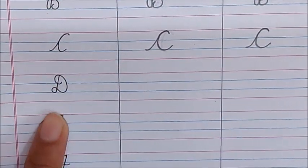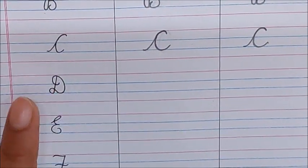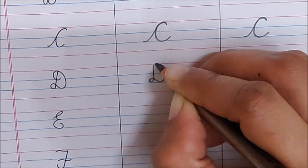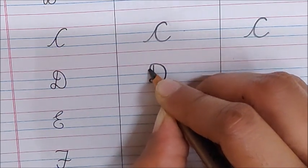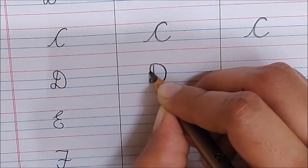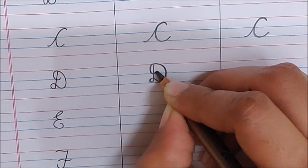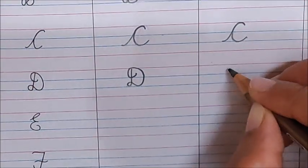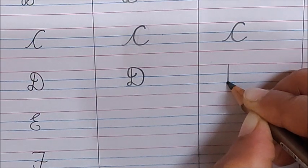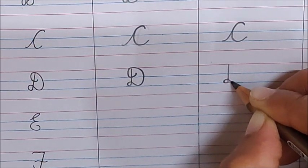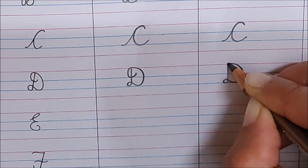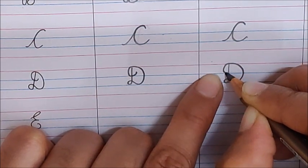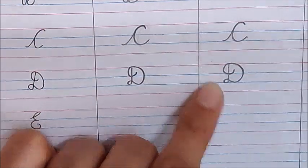Now, which letter is this? Letter D. Standing line, make a small loop, go up, touch the red line. Now again — look here — I am going down. When you reach the first blue line, you have to turn like this. Letter D. Watch one more time: go down, it's a standing line, now make a small loop, bring it up. Now we have to turn — turn and bring it till the first blue line. When you reach the first blue line, turn inside. Letter D.